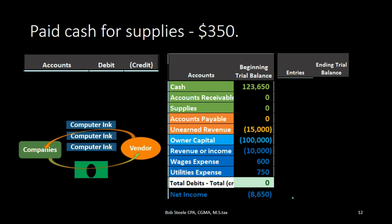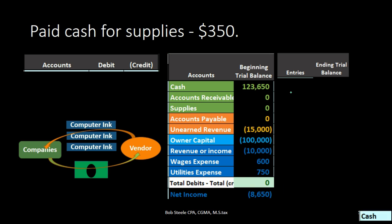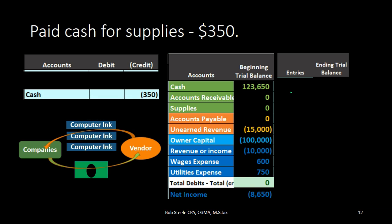First question: is cash affected? In this case we paid cash, so yes — and cash has a debit balance. To make cash go down, we do the opposite: we credit it. Credits traditionally go on the bottom, so although we're thinking of cash first, we put it on the bottom. It can be easier to think of cash before thinking of the other side of the journal entry.